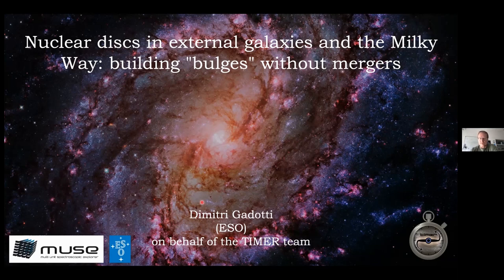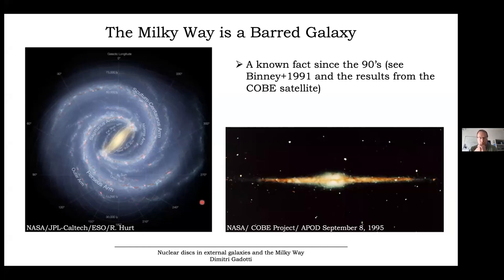Let me start with the Milky Way. The Milky Way is a barred galaxy. On the left you can see an artistic representation based on real data — you can see the bar here, this elongated structure that crosses the center of the galaxy, and the Sun is in this position. The fact that the Milky Way is barred has been known since the early 90s, from a paper by Binney and collaborators who studied the kinematics of cold gas and concluded the best explanation was a non-axisymmetric gravitational potential — a bar in the Milky Way.